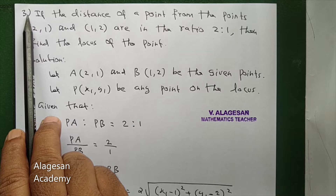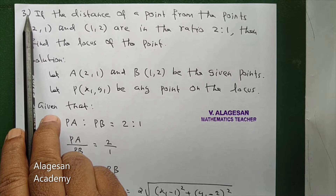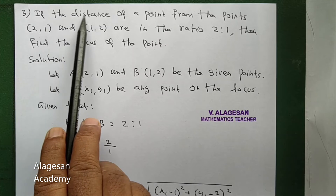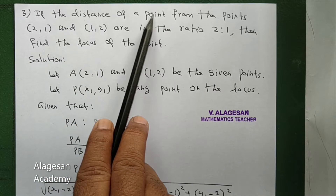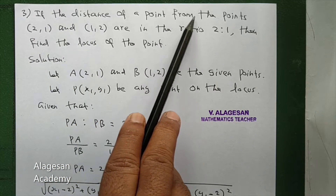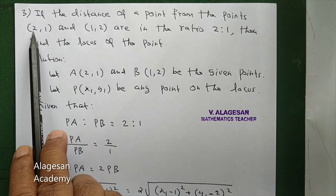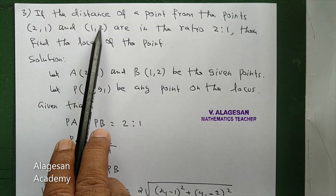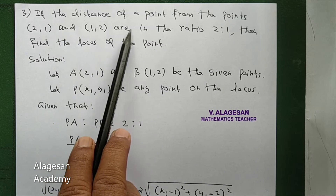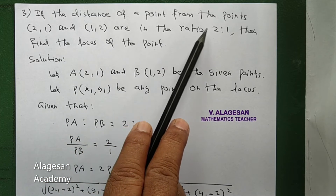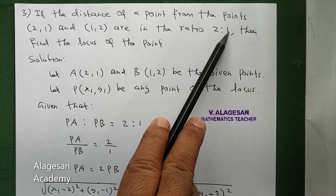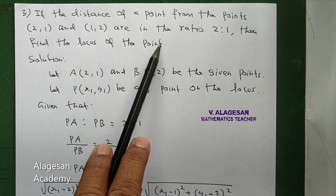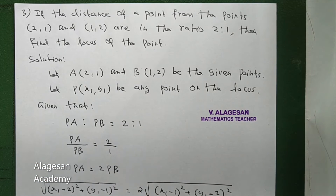Hi students, see question number 3. If the distance of a point from the points (2,1) and (1,2) are in the ratio 2:1, then find the locus of the point.